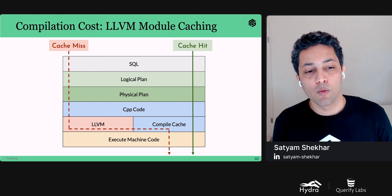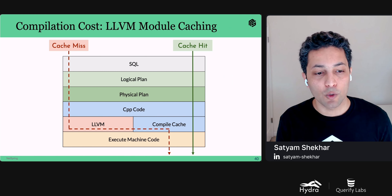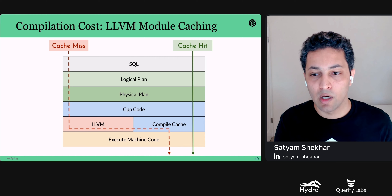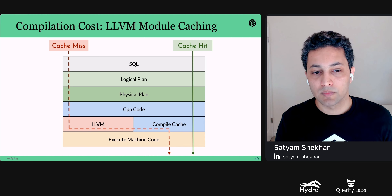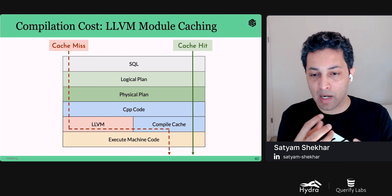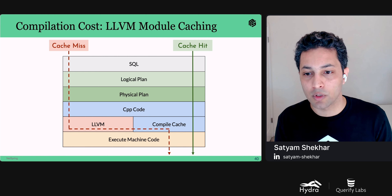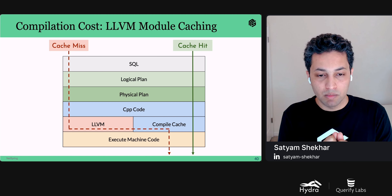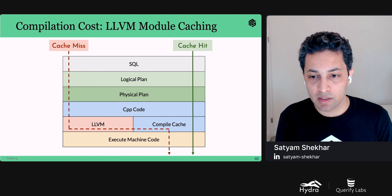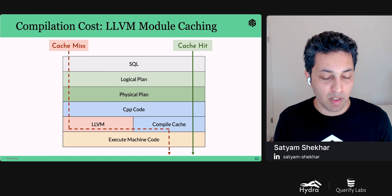To minimize the cost of compilation, at NetSpring we cache the compiled and optimized LLVM modules against the generated C++ code. Physical operators share a common compiled cache instance. During execution, the generated C++ code is used to look up pre-compiled LLVM modules in the compile cache. On a cache miss, the C++ code is compiled to native instructions and saved in the compile cache for future use. On a cache hit, the compiled module is retrieved and loaded into memory and executed. The compile setup is such that it compiles identical code just once, even in case of parallel compilation across different queries.